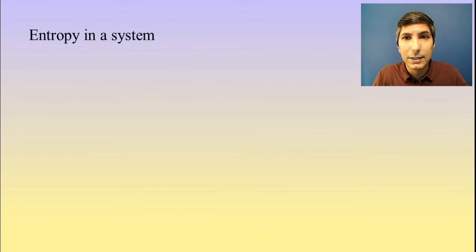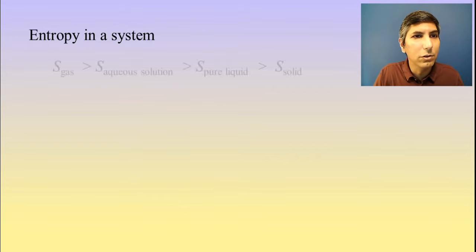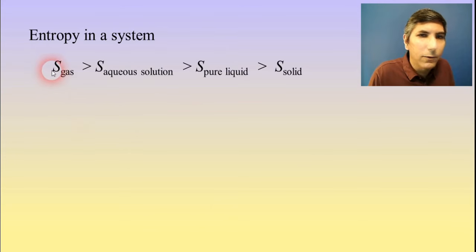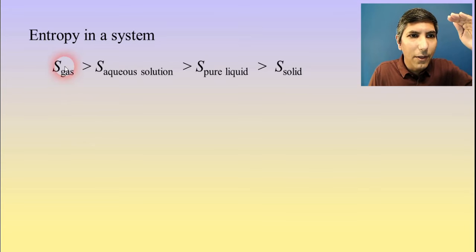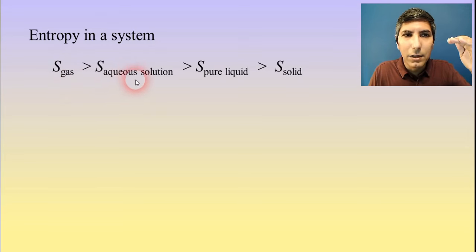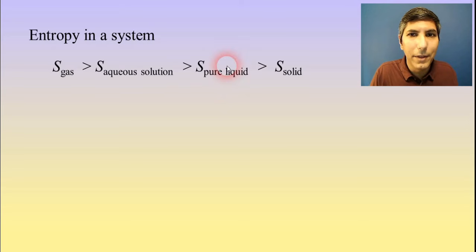Now, as we think about the entropy in a system over the course of a chemical reaction or a physical process, we need to remember that the entropy, and of course, S represents entropy, the entropy of a gas is the highest of them all. That is the highest entropy state that you can have in a chemical reaction for all practical purposes. Then if you have an aqueous solution, it's a little bit less because you have ions swimming around in a solvent. And so that's going to have more entropy than a pure liquid, like just a bottle of distilled water or something like that. And of course, that's going to have a higher entropy than a solid. Solids are the lowest. And so that's the hierarchy of entropy whenever we're thinking about states of matter. Solid is the lowest, then liquid, aqueous is the second highest, and of course, gas is the highest.